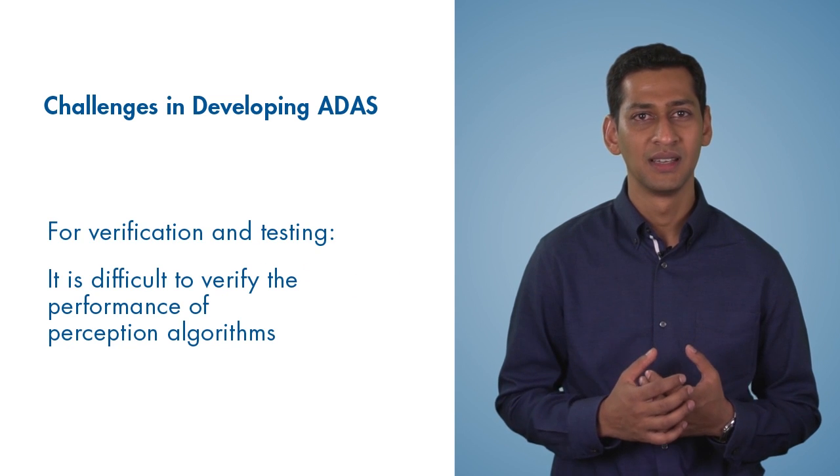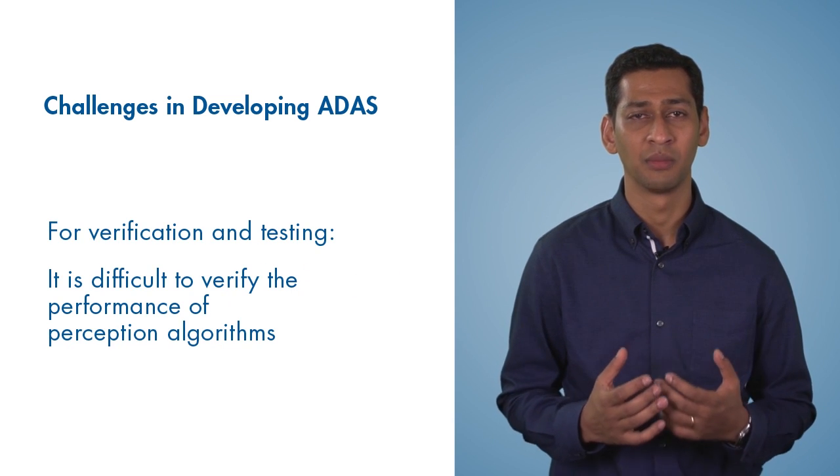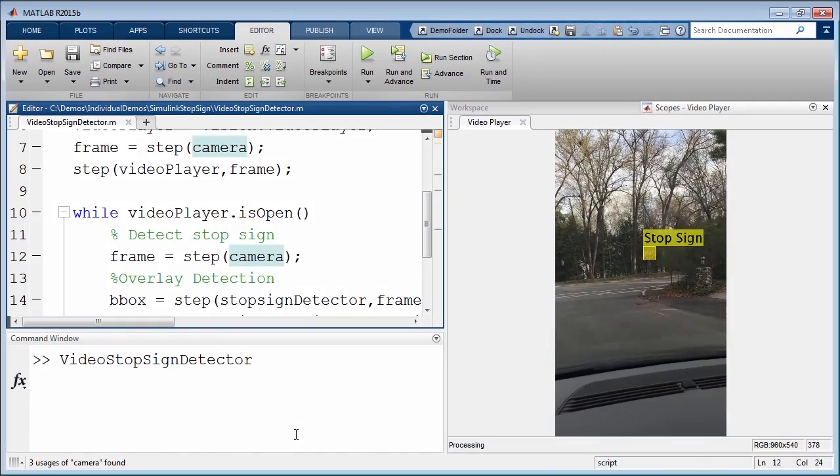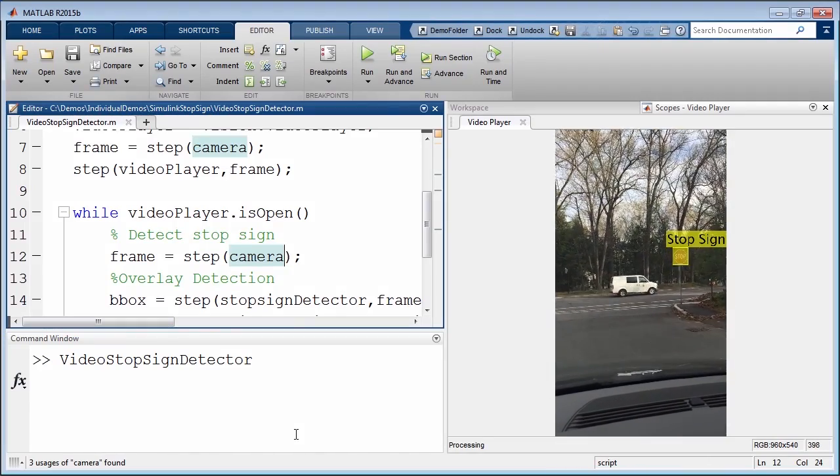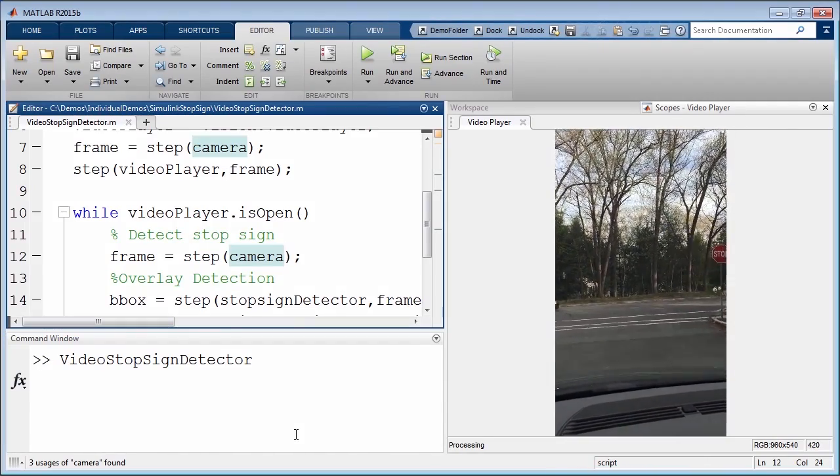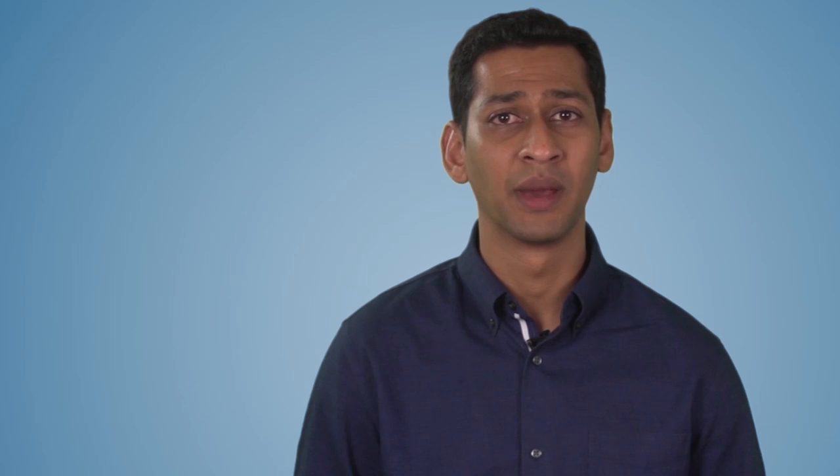In addition, testing and verifying changes to the perception algorithms can be very challenging. The following demonstrations use a stop sign detection system as an example to show how computer vision in MATLAB and Simulink can address these challenges.